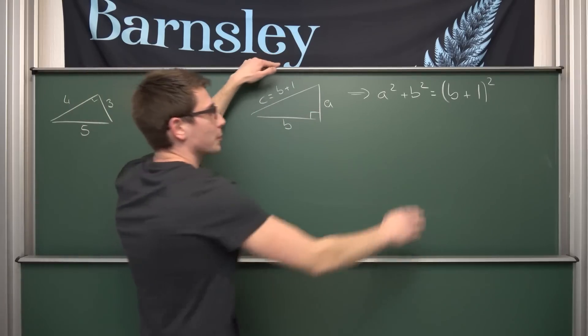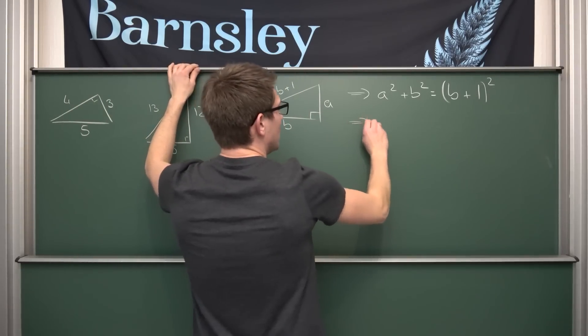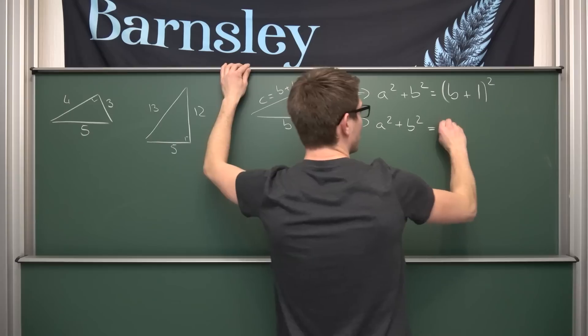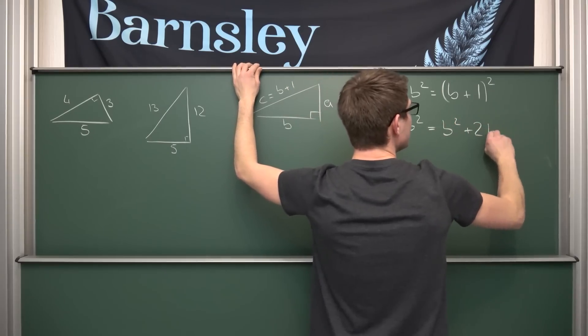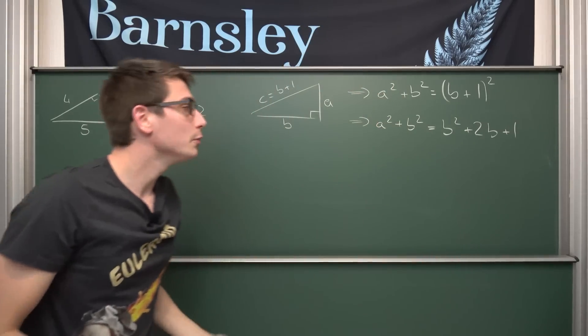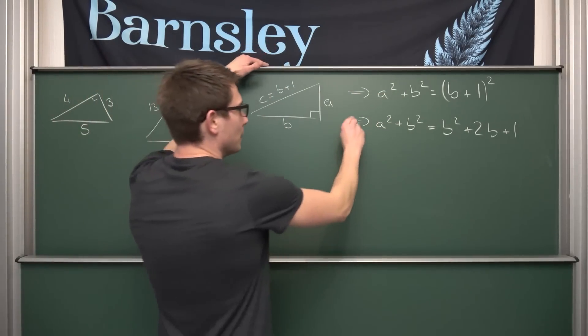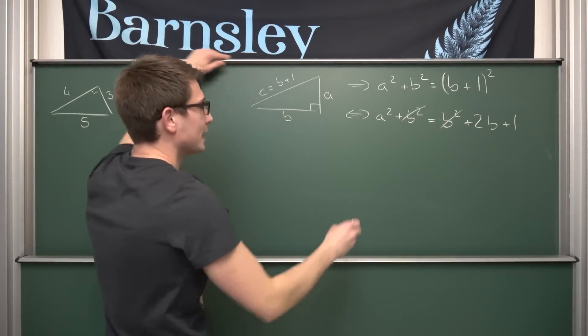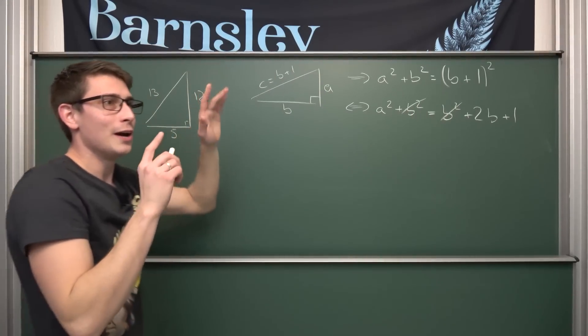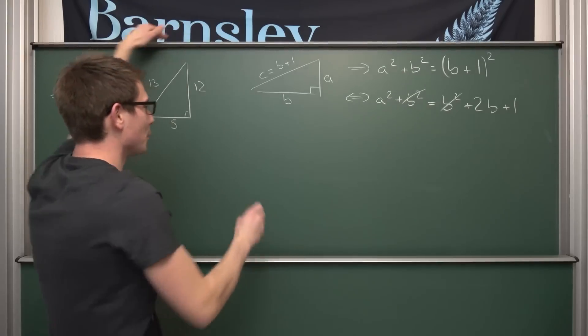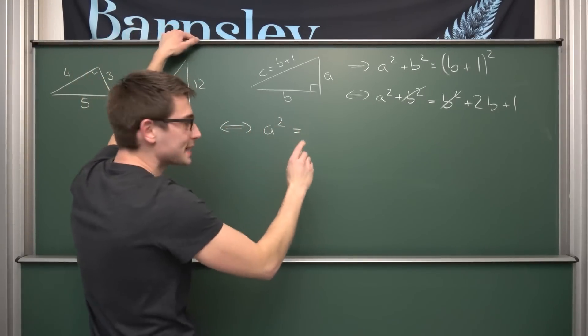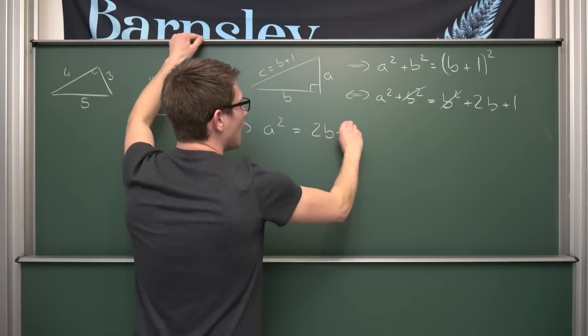And now, by Papa Pythagoras, we know that A squared plus B squared is hence nothing but the hypotenuse squared, meaning this is going to give us (B + 1) squared. And now we can just make use of the binomial theorem, leaving us with A squared plus B squared being thus nothing but B squared plus 2B plus 1.